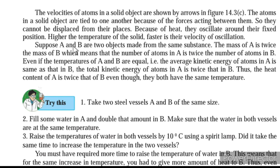Suppose A and B are two objects made from the same substance, and the mass of A is twice that of B. That means the number of atoms in A is twice that in B. Even if the temperatures of A and B are equal, the average kinetic energy of atoms in A is the same as in B. But the total kinetic energy of atoms in A is twice that of B. Thus, the heat content in A is twice that of B, even though both have the same temperature.